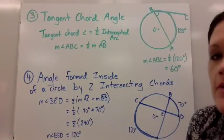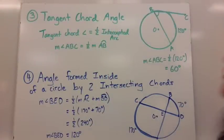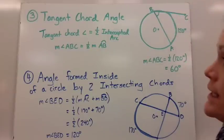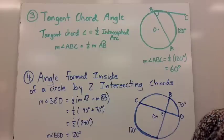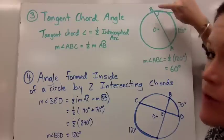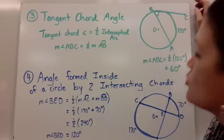The third type of angle is the tangent chord angle. So it's an angle formed by a tangent and a chord. And the tangent chord angle is equal to half of the intercepted arc. So in my picture, I have angle ABC, which was formed by a tangent and a chord.